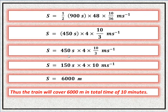So S equals one-half into (600 + 300) seconds, which is 900 seconds, multiplied by 48 times 10 over 36. Dividing by 2 gives 450 seconds, and 48 over 36 simplifies to 10 over 3.